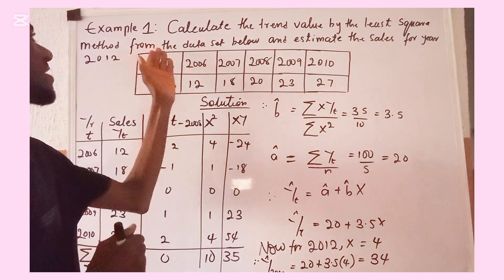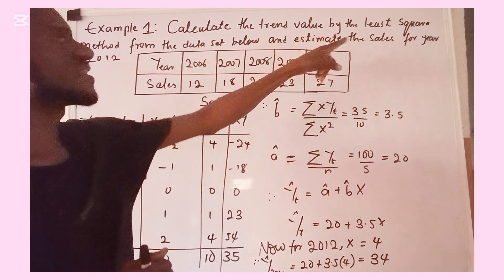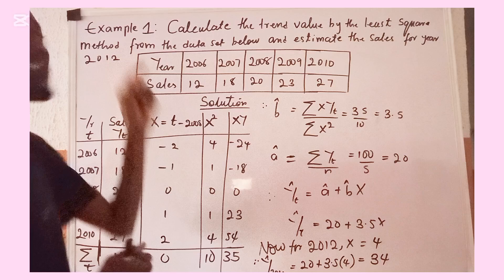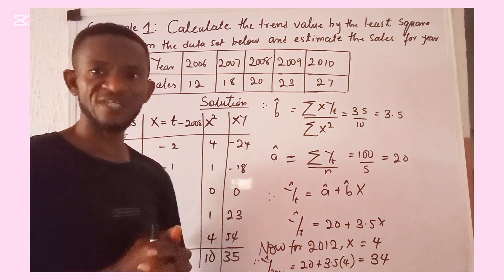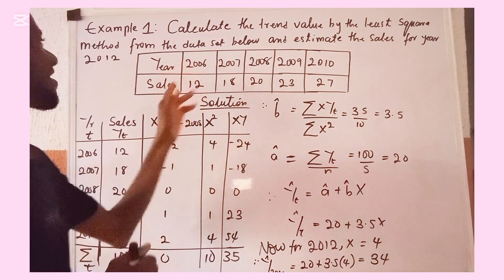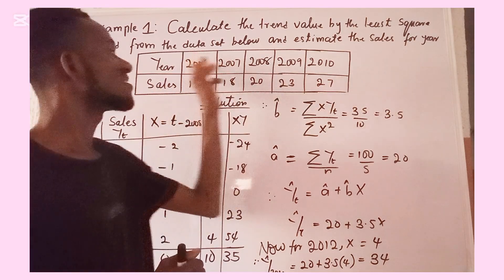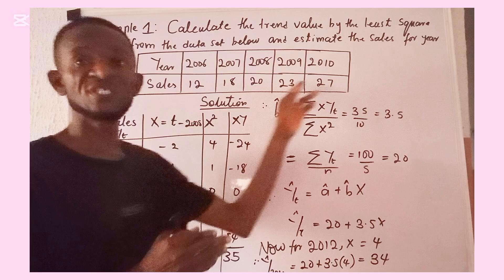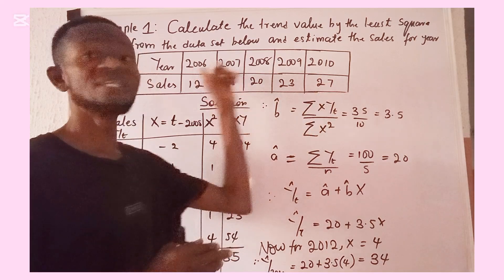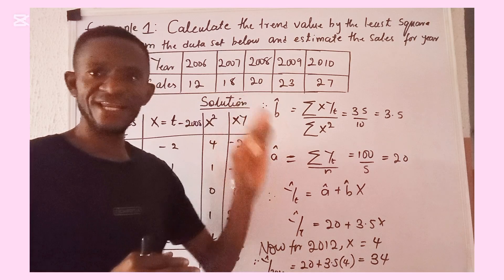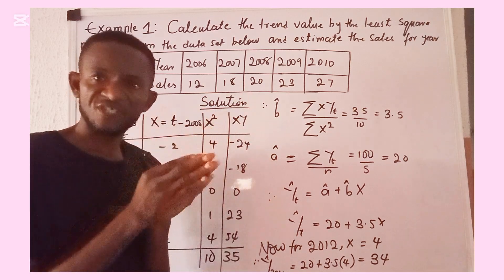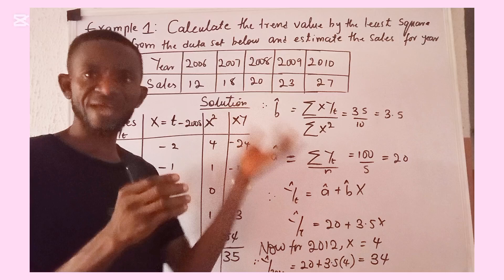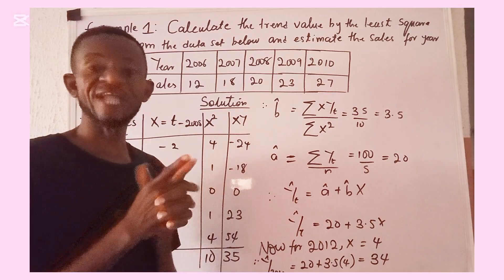The question on the board says: calculate the trend value by the least square method from the data set below and estimate the sales for year 2012. The data is a time series because these observations, which stand for sales, were recorded against time. A time series is a set of observations recorded against time — that was our primary definition during the introductory aspect of our class.